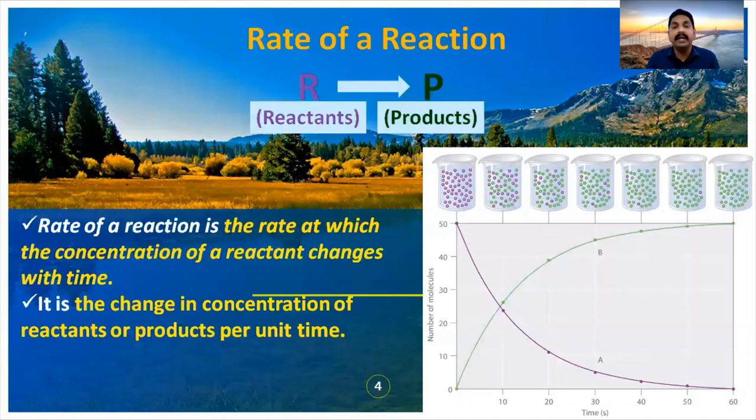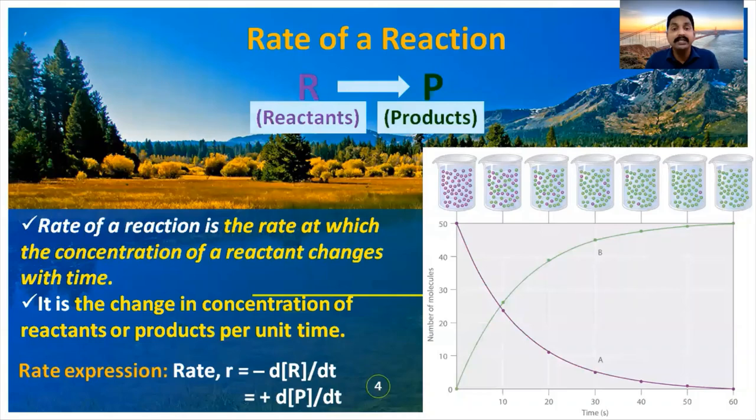Rate of reaction can be written as: rate equals minus d[R]/dt, which is equal to plus d[P]/dt. The negative symbol indicates decrease in concentration of reactants, and the positive symbol indicates increase in concentration of products.